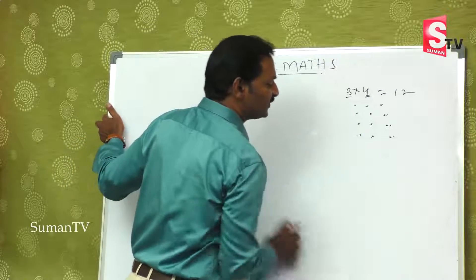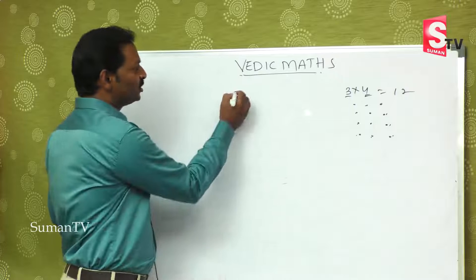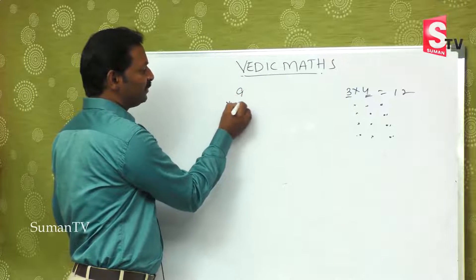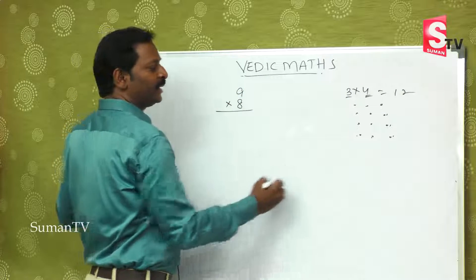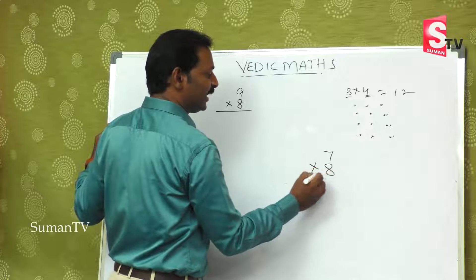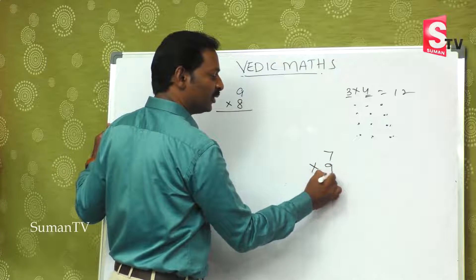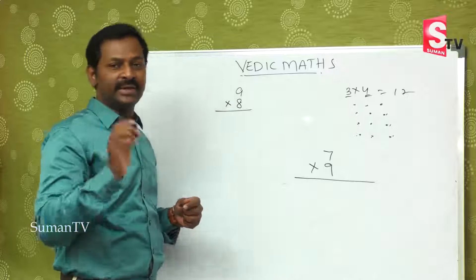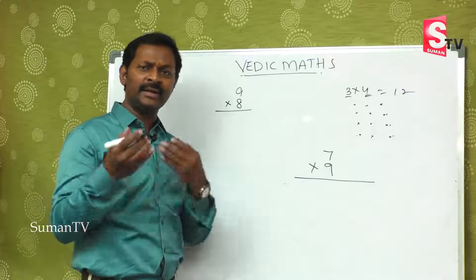First, I will start with a small number. Suppose, 9 is multiplied by 8 and 9 is multiplied by 9. How do we do this? Let's try to do it using tables.